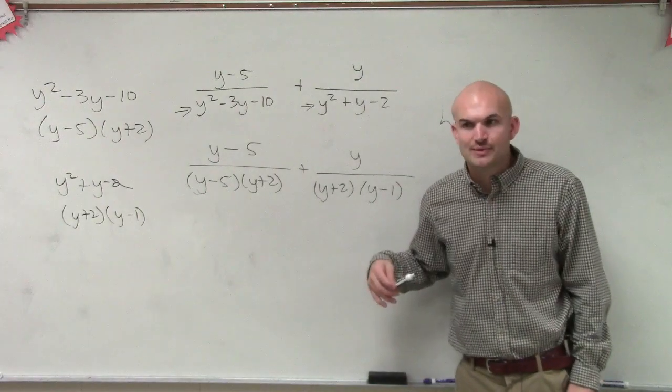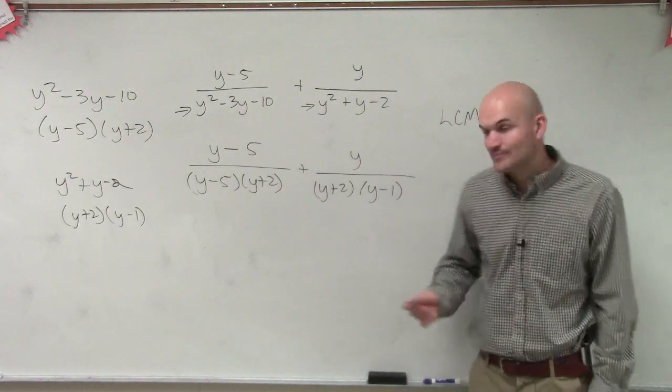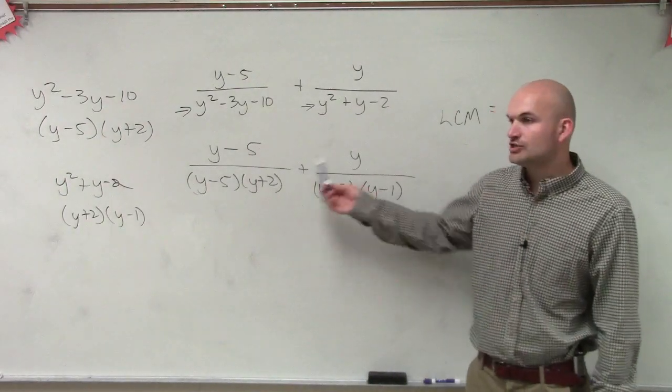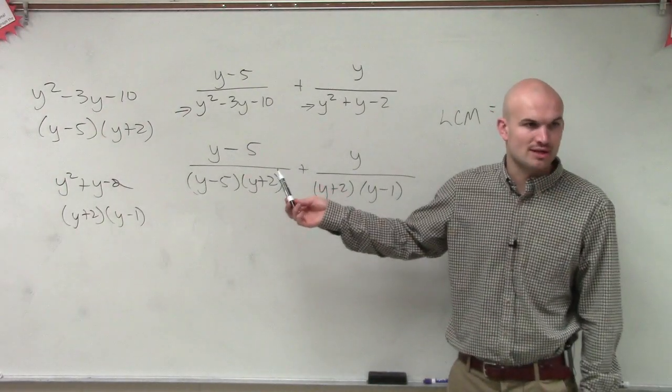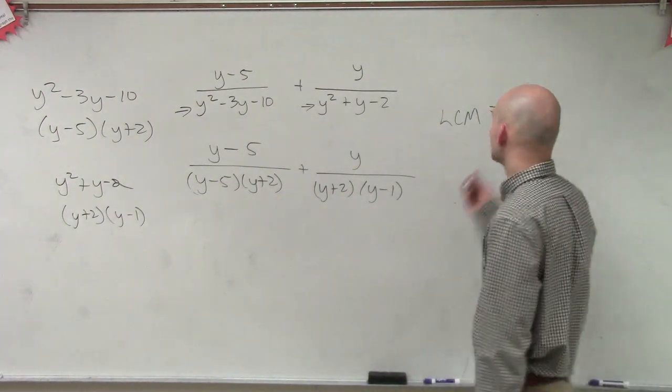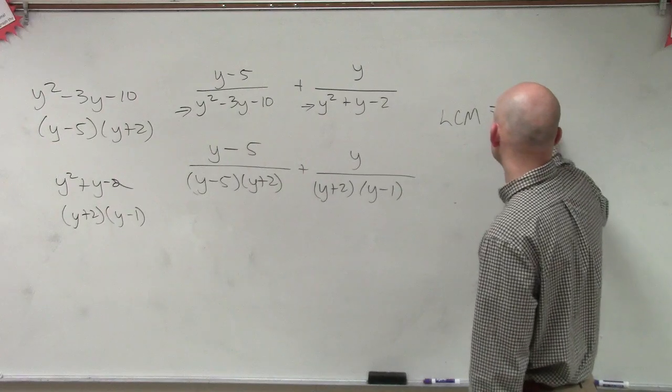What is the common multiple between these two that they both have to contain? If I was going to multiply these out, do I need to show y plus 2 twice, or can I just show it once? Does y plus 2 both divide into y plus 2? Yes. So I can write my LCM is going to be y plus 2.